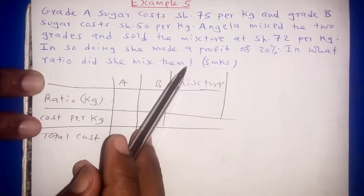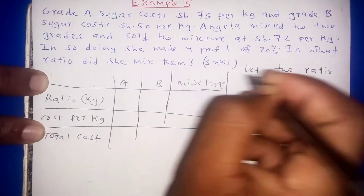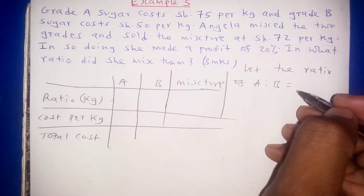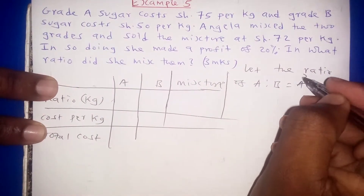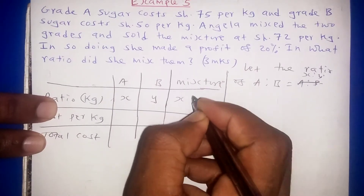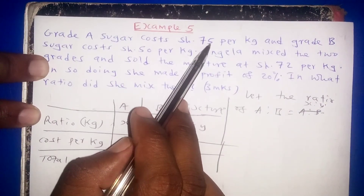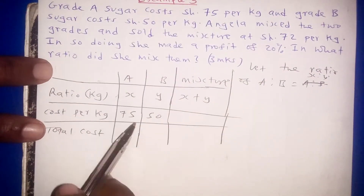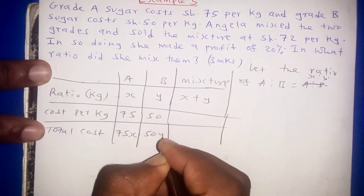Since we need to find the ratio, we let the ratio of Grade A to Grade B be x to y. The total ratio is x + y. Cost per kg: Grade A is 75, Grade B is 50. Total cost: 75x for Grade A and 50y for Grade B.